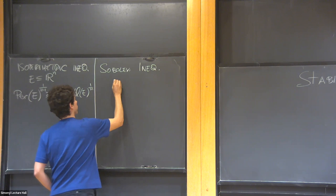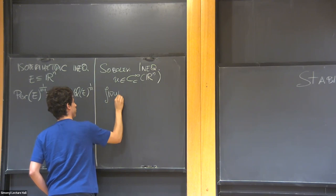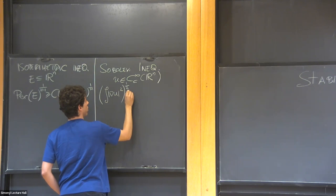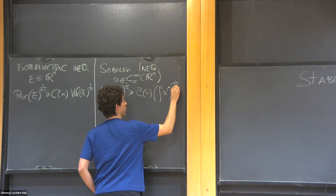Similarly here, you have a function, and instead of the perimeter, you have the Dirichlet energy. I'll talk about the L2, L2 star, so volume inequality. And here, instead of the volume, you have a certain mass, which is the L2 star.